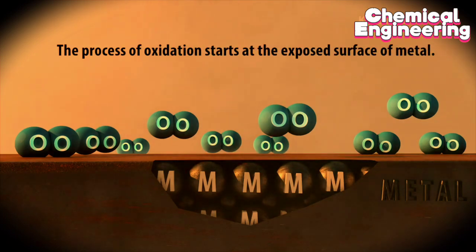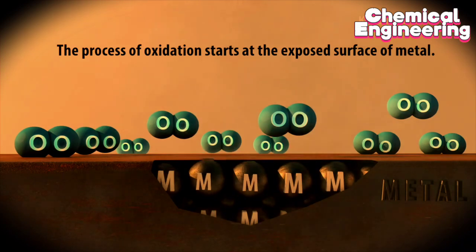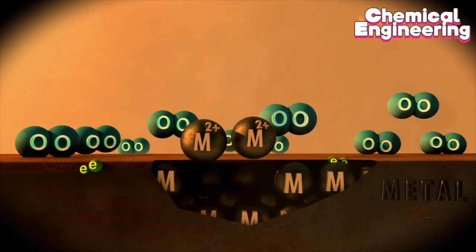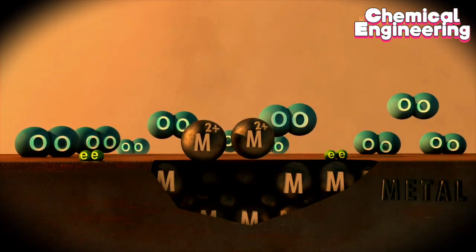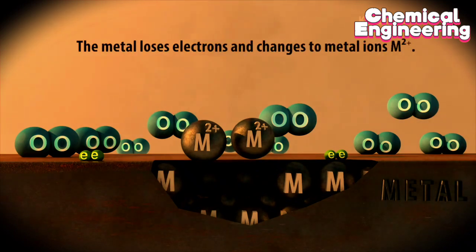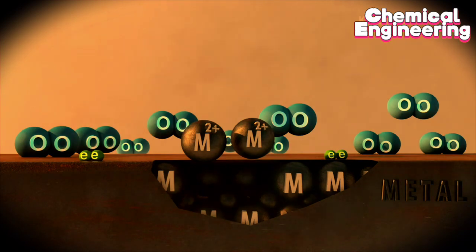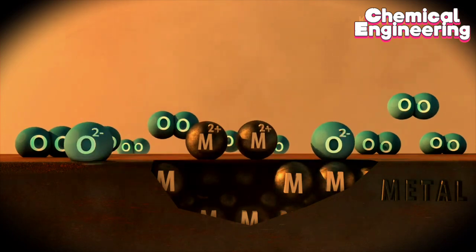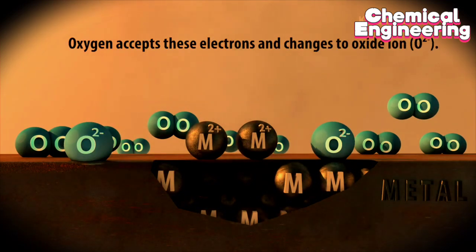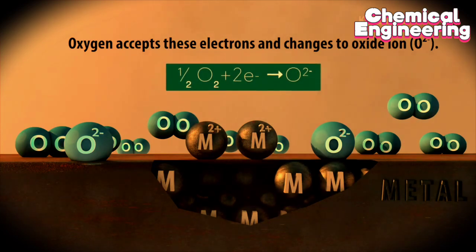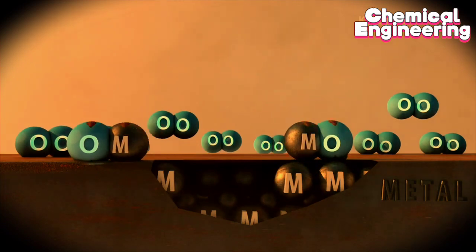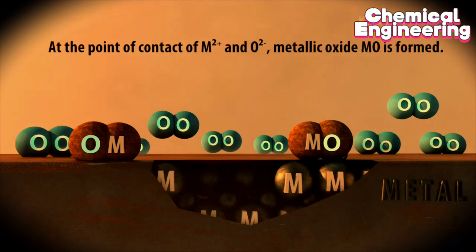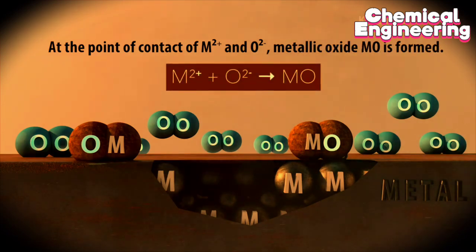Mechanism of oxidation corrosion: The process of oxidation starts at the exposed surface of metal. The metal loses electrons and changes to metal ions. Oxygen accepts these electrons and changes to oxide ion. At the point of contact of metal ion and oxide ion, metallic oxide is formed.